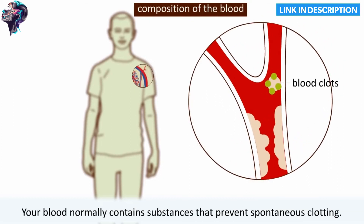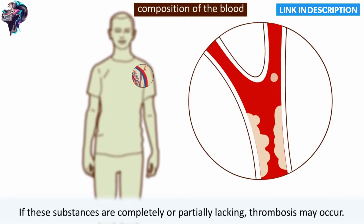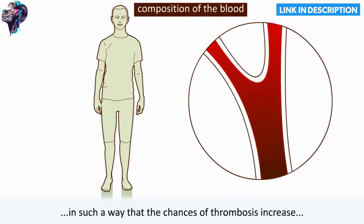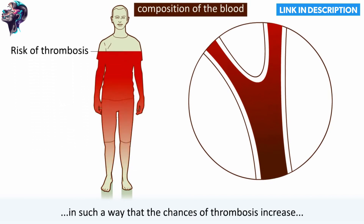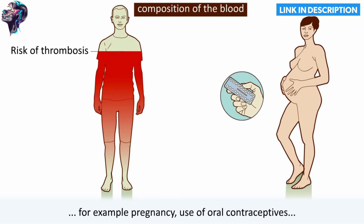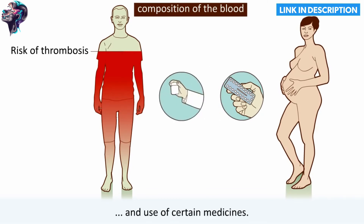Your blood normally contains substances that prevent spontaneous clotting. If these substances are completely or partially lacking, thrombosis may occur. There are also circumstances that change the composition of your blood in such a way that the chances of thrombosis increase — for example, pregnancy, use of oral contraceptives, and use of certain medicines.